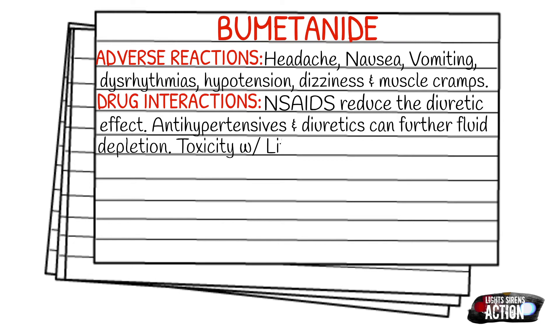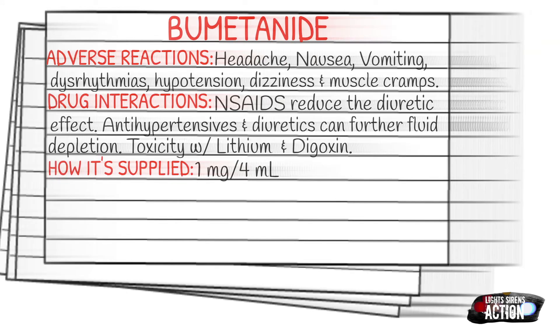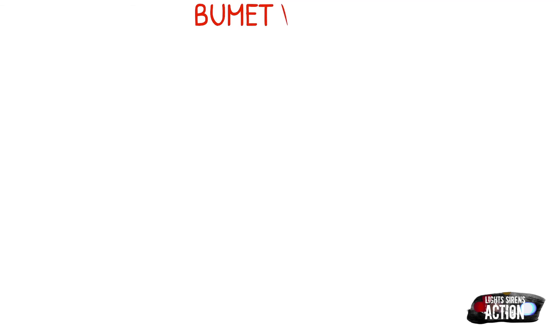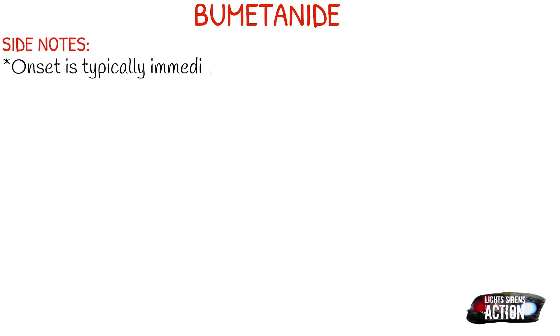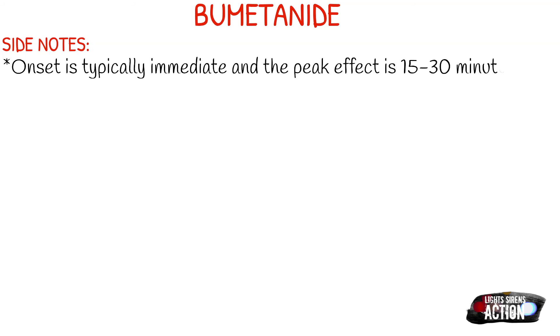How it's supplied: the most common vial is probably going to be 1 milligram in 4 milliliters. A few side notes about Bumex — the onset of the medication is typically immediate, and the peak effect is between 15 to 30 minutes. Whereas with Lasix, you're looking at a 15 to 30 minute onset with a longer duration. So Bumex definitely has a more rapid onset than Lasix.